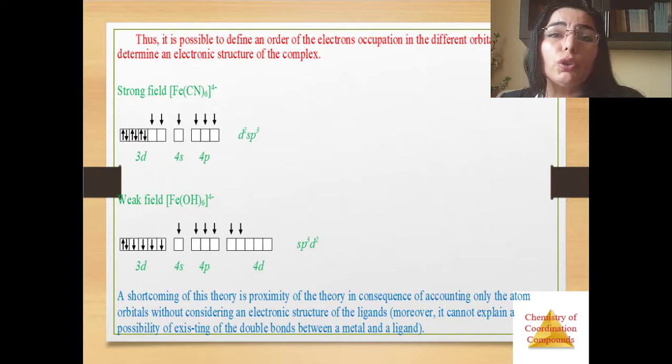Strong field we see iron CN and weak field iron hydroxide. A shortcoming of this theory is the approximation of this theory in consequence of accounting only the atom orbitals without considering an electronic structure of the ligands. Moreover, it cannot explain a possibility of existing of double bonds between a metal and ligand.